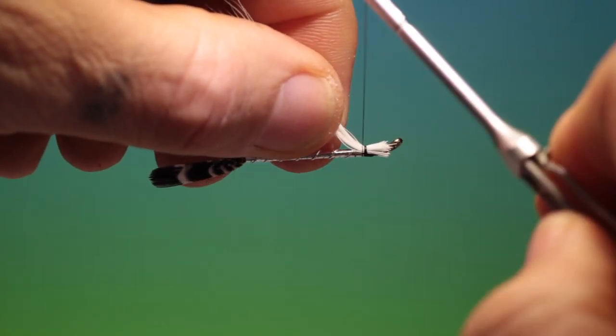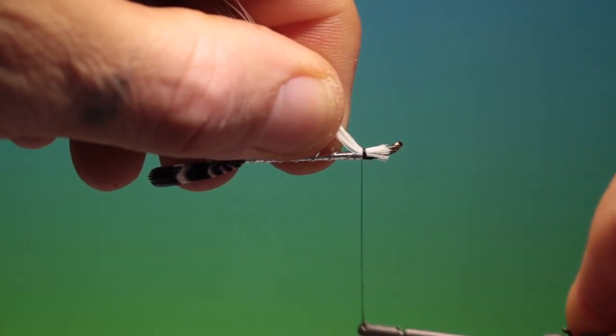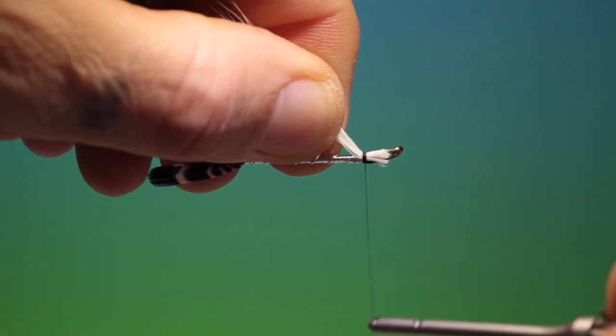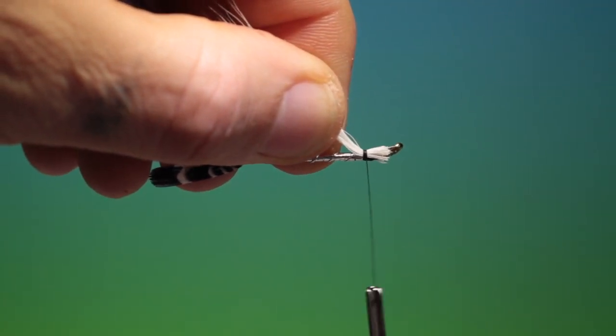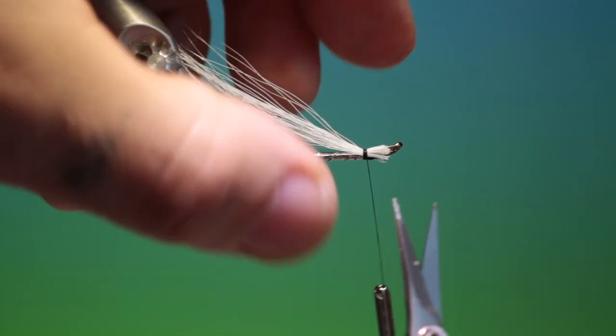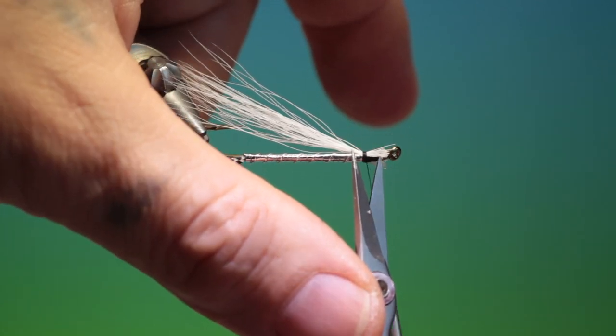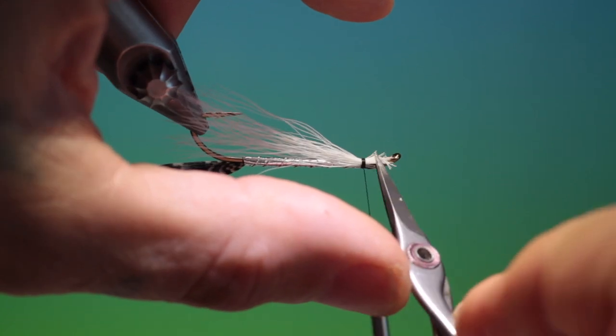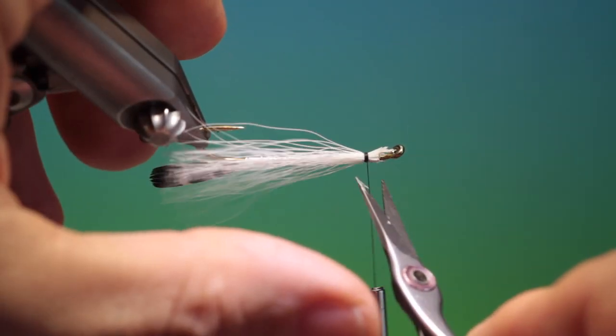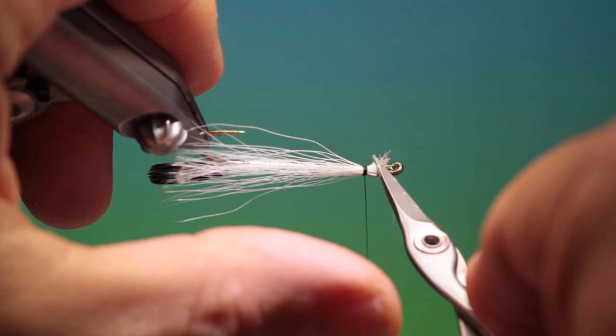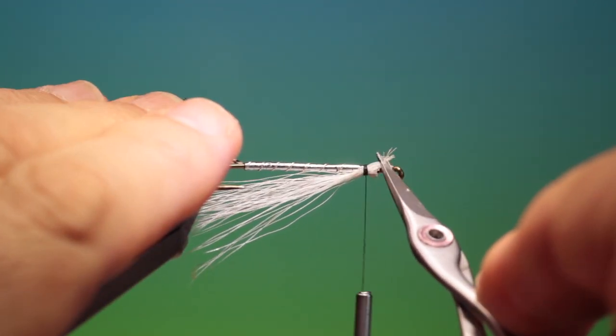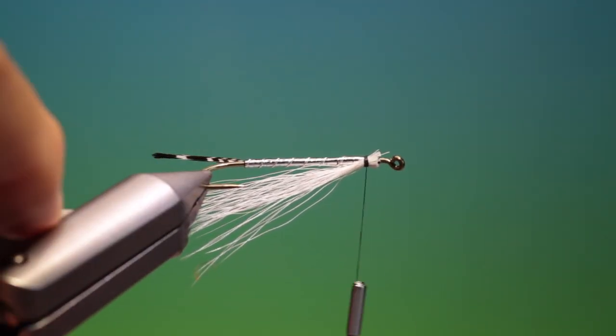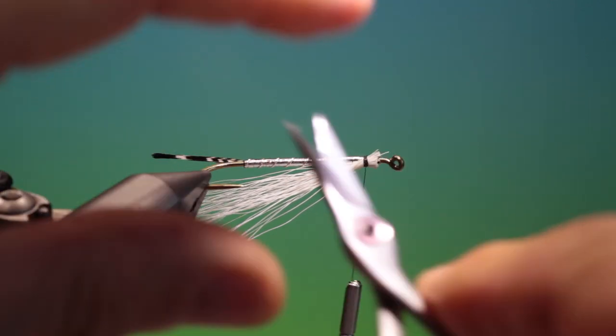I'll pull that up onto the shank and we'll secure it. And I'll come in with my serrated scissors and I'll just trim that off. Like so. One more there.